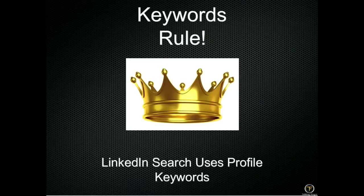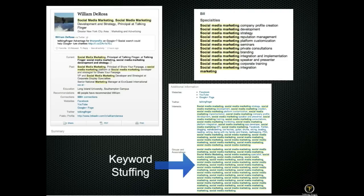Keywords are basically how LinkedIn uses search to find people. In my profile title I have 'social media marketing,' 'marketing development,' 'strategy' — I put social media marketing in as many times as I can, same with specialties. Whatever terms you want to be found on, put in terms that are realistic to who you are. I wouldn't put SEO or other things I don't actually do just so I can rank higher. You want to be careful and honest about how you use keywords.